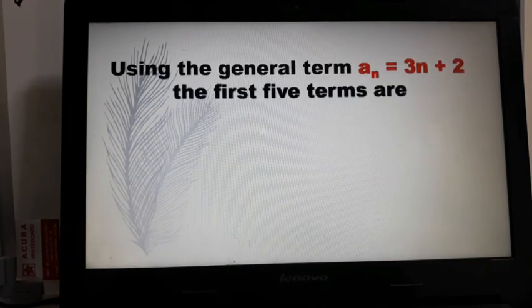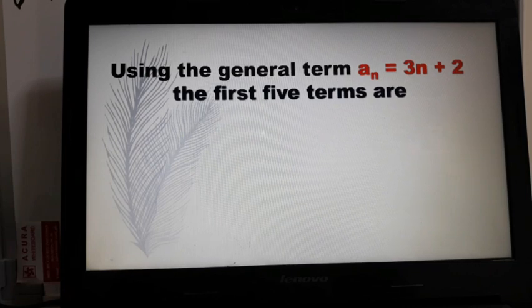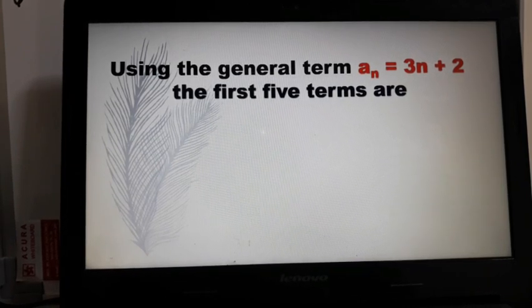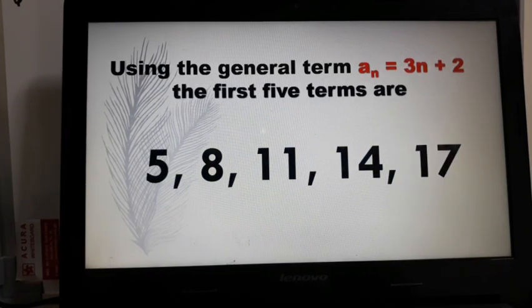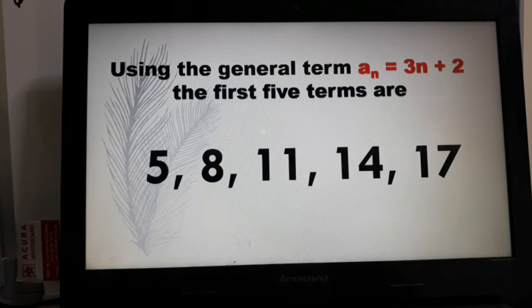Now to answer our problem earlier, using the general term a_n equals 3n plus 2, the first five terms are 5, 8, 11, 14, and 17.